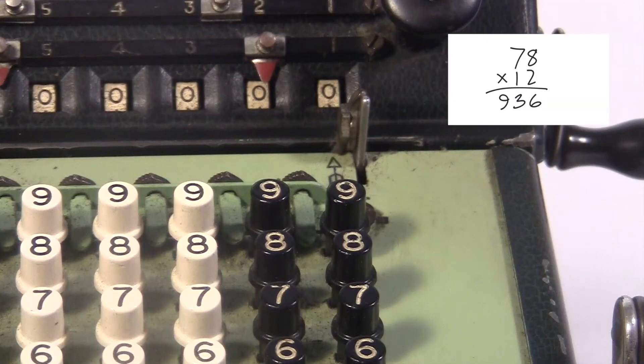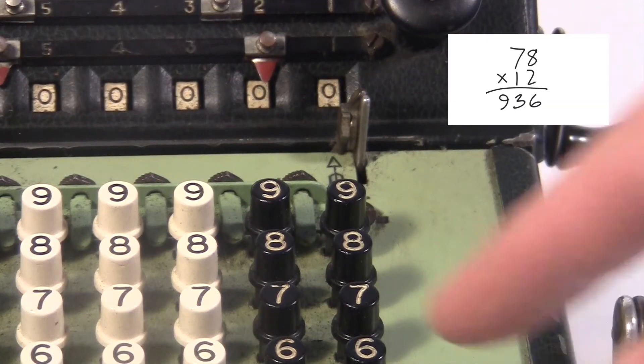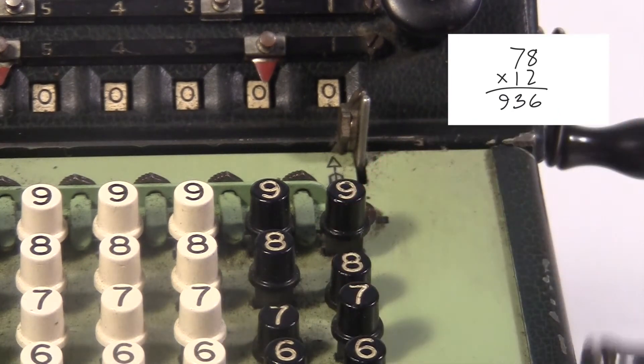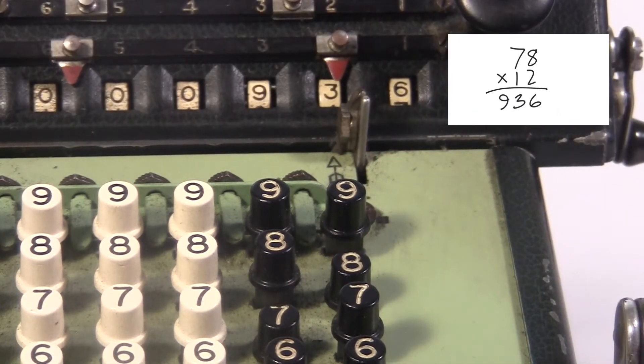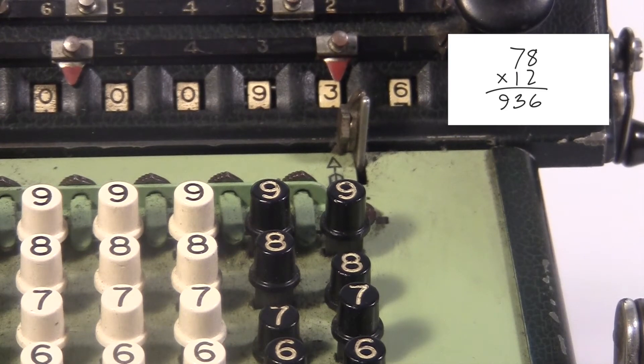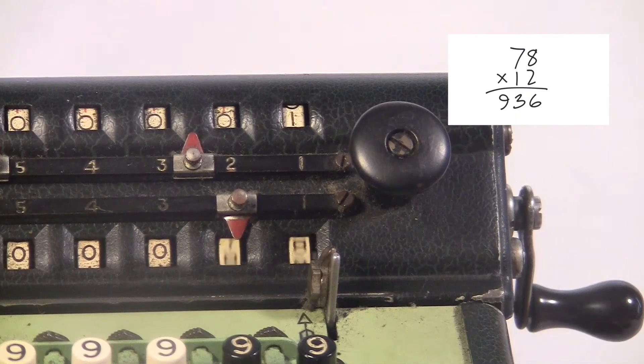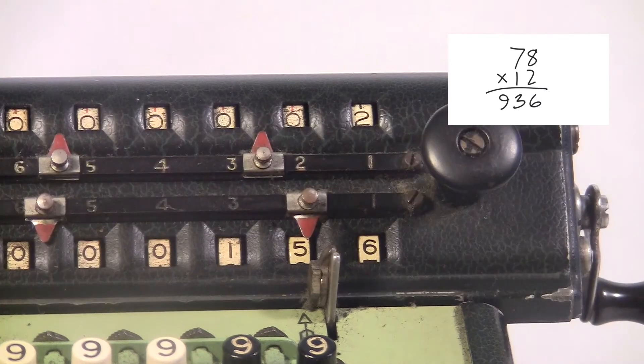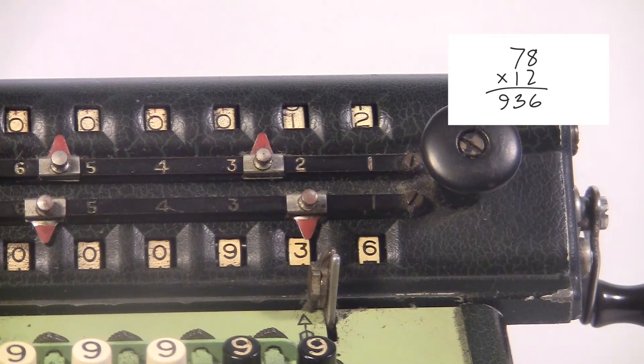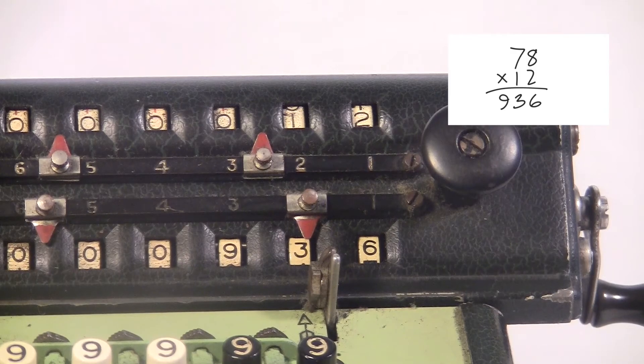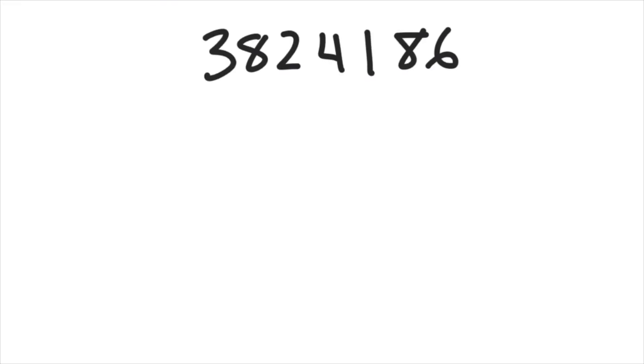So to do 78 times 12, it's like this. I type in the 78, add it twice, then shift over once and add it once. And check out the top display when I did that. That one also was shifted by one position. So I see the number 12, which is what I was multiplying. So to multiply, you type one of your numbers in. You just keep on adding and shifting until you build the other number in the small display.